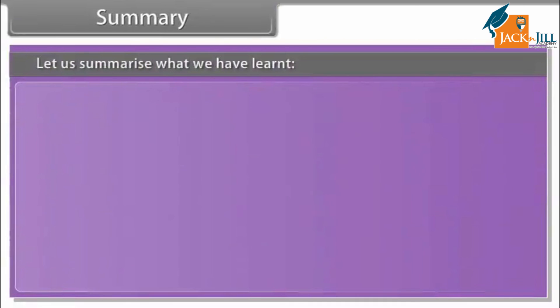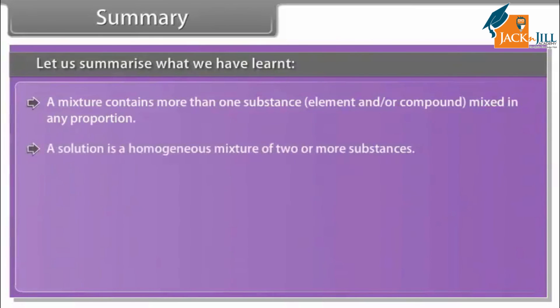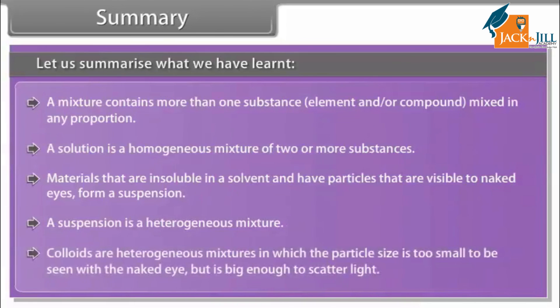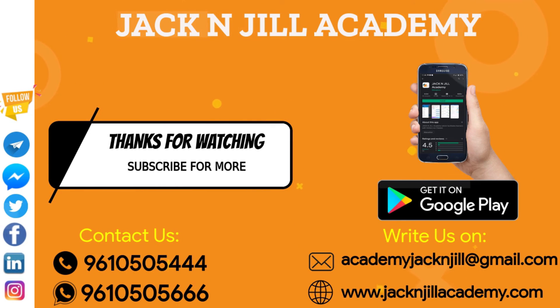Summary: A mixture contains more than one substance — element or compound — mixed in any proportion. A solution is a homogeneous mixture of two or more substances. Materials that are insoluble in a solvent and have particles visible to the naked eye form a suspension, which is a heterogeneous mixture. Colloids are heterogeneous mixtures in which the particle size is too small to be seen with the naked eye but large enough to scatter light.